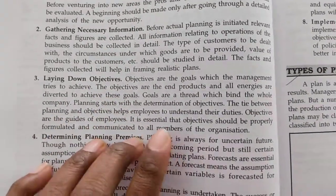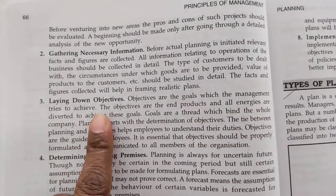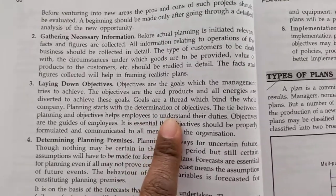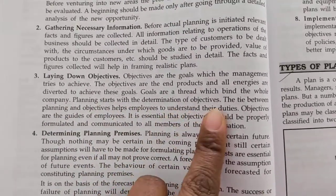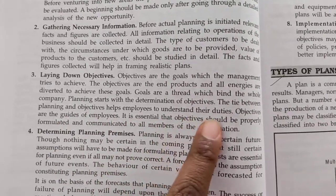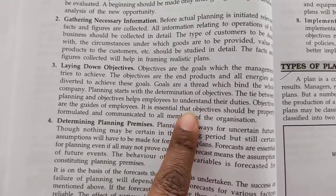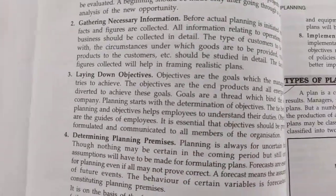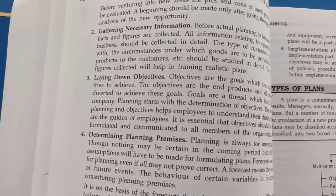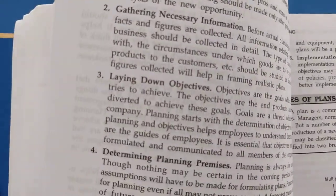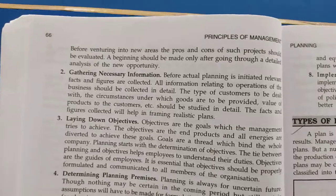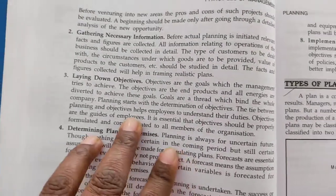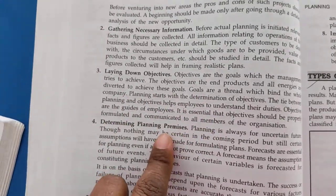Next is laying down the objectives. Objectives are the goals which the management tries to achieve. They are the end products and all energies are diverted to achieve these goals. Goals are the thread which bind the whole company. Planning starts with the determination of objectives. The tie between planning and objectives helps employees understand their duties. Objectives should be properly formulated and communicated to all members of the organization.